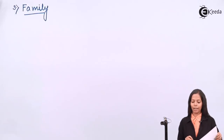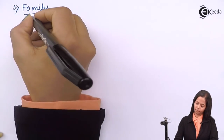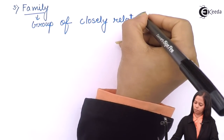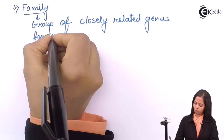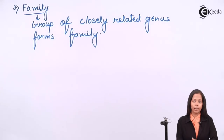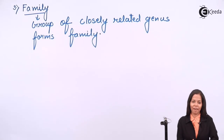Next, we study the category called family. Family is a group of closely related genera. An example is Felidae — the cat family. Felidae includes the genus Felis, which covers cats, and the genus Panthera, which covers tiger, lion, leopard, jaguar, etc.